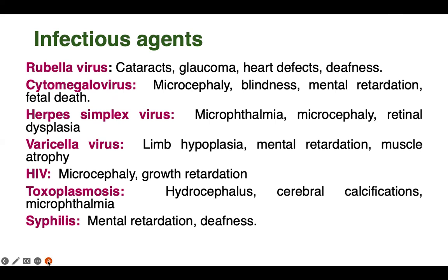In almost all such cases, the pregnancy naturally terminates on its own — abortion occurs. But if the pregnancy continues and the patient is rubella virus IgG positive, it may lead to cataracts in the infant or fetus, glaucoma, heart defects, and deafness.